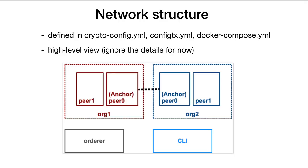Just to give you a first high level view, the network structure is defined in three files. There is the crypto-config file which is for the cryptographic artifacts, the config-tx file which is a YAML file that describes the network and the channels, and the docker-compose for defining the docker nodes and services. Hyperledger Fabric is not really tied to Docker — you could use anything you want — but it's recommended and a good way to get started.